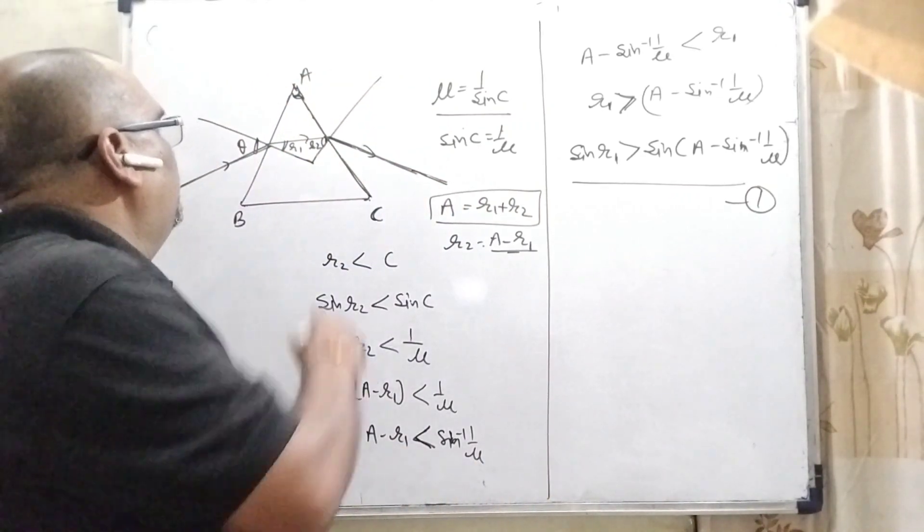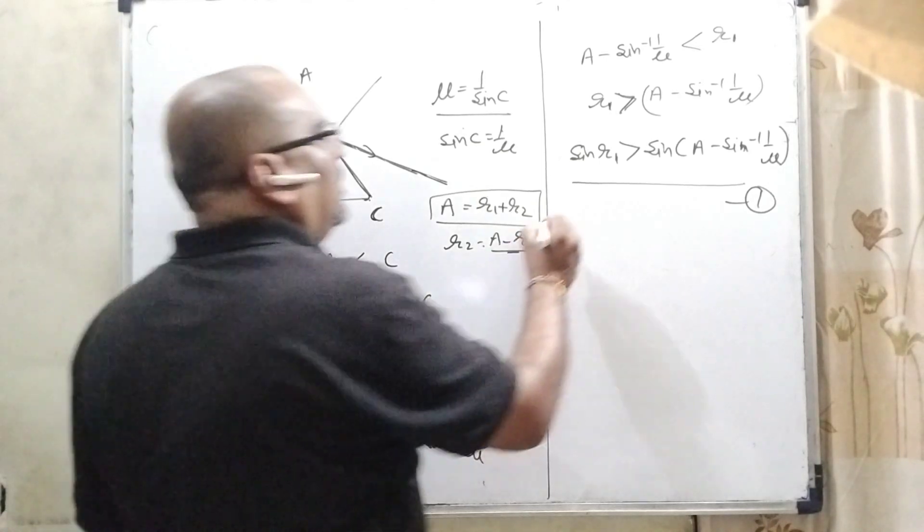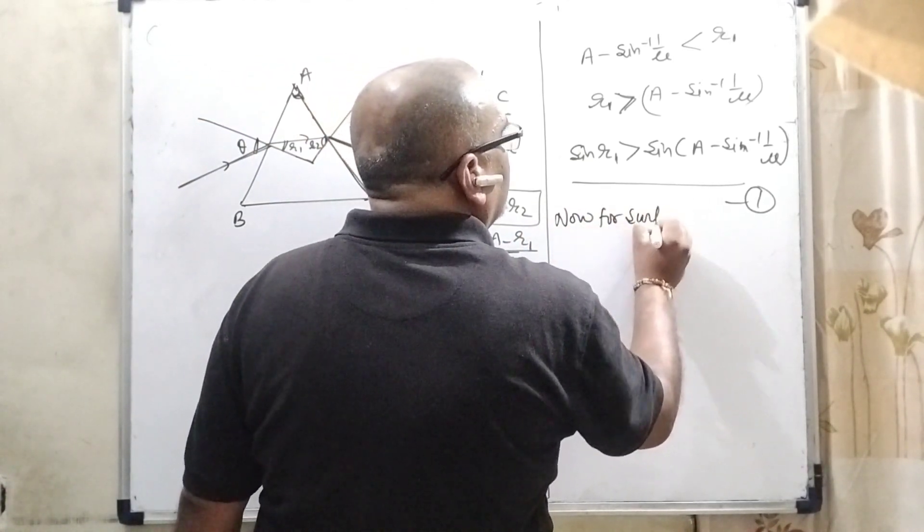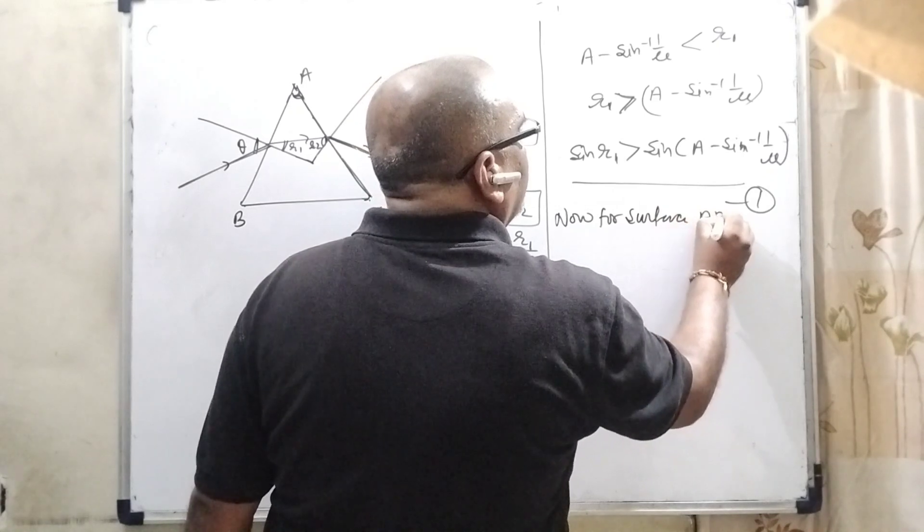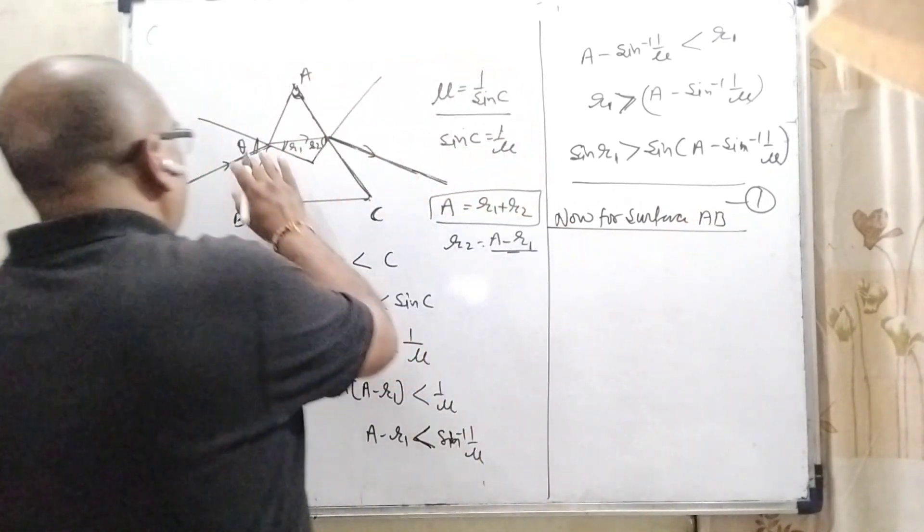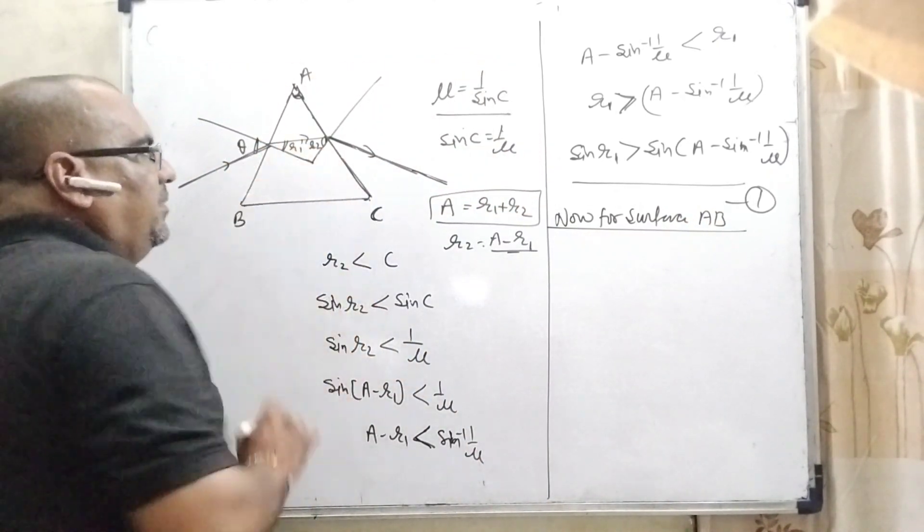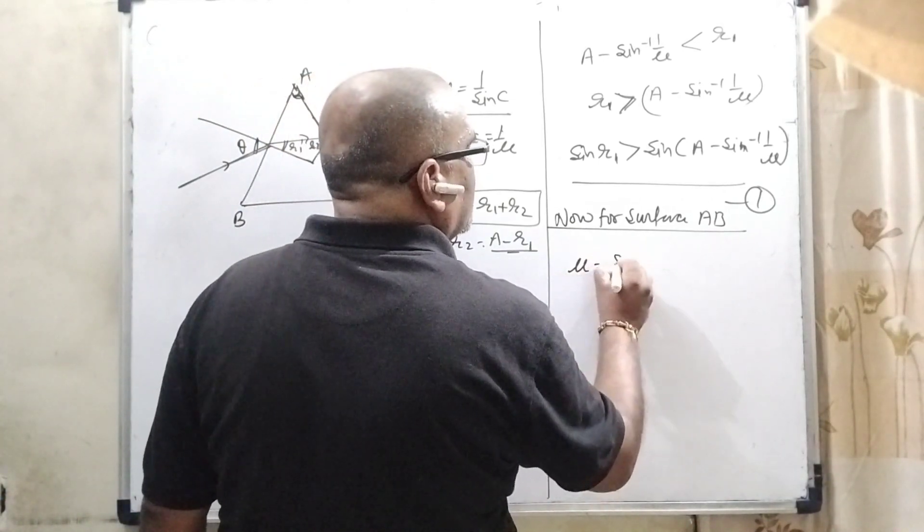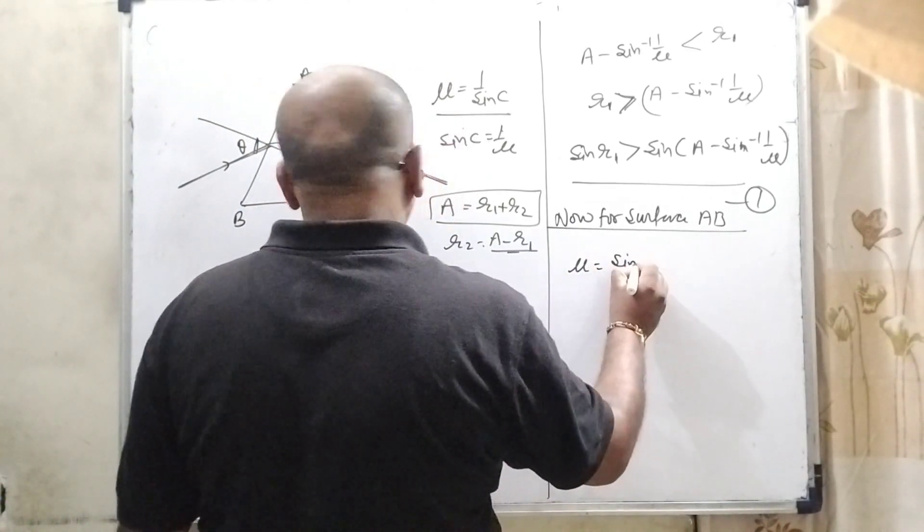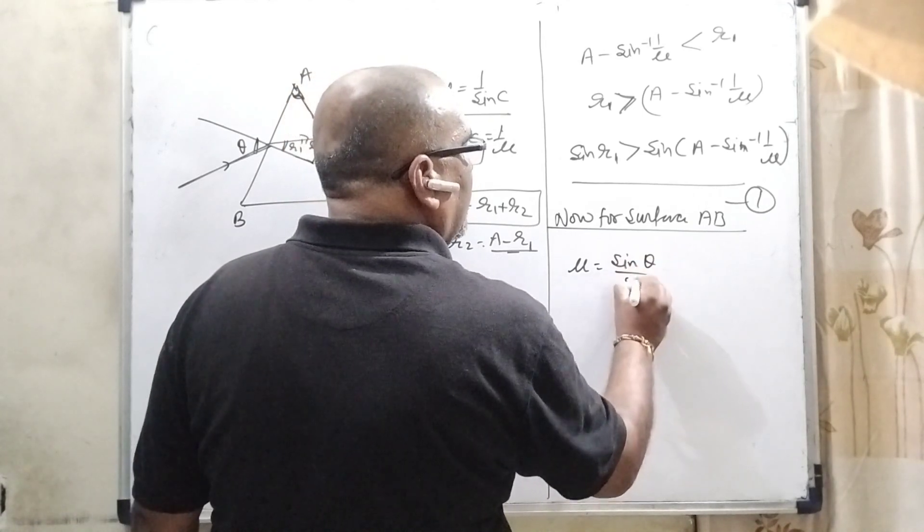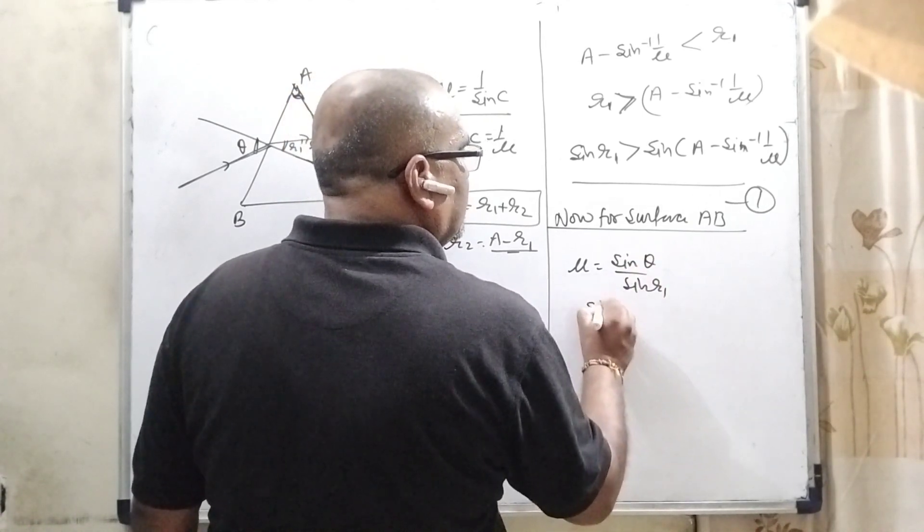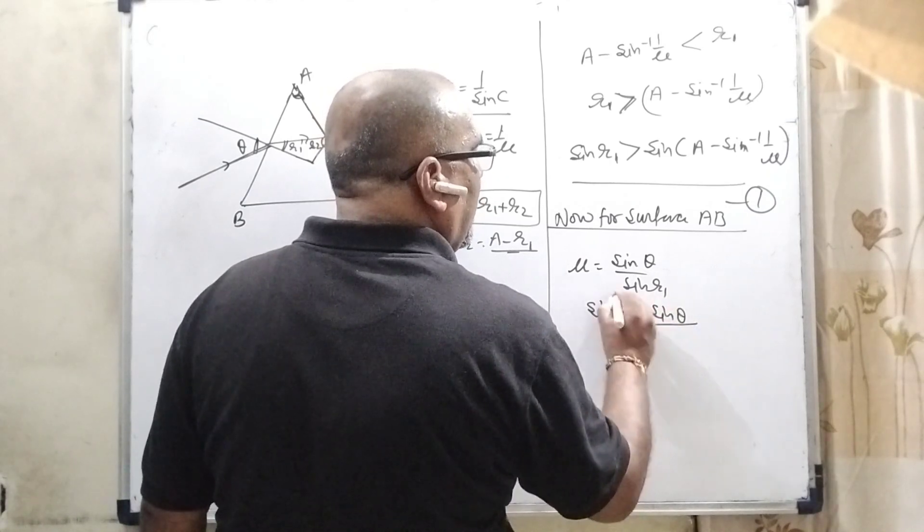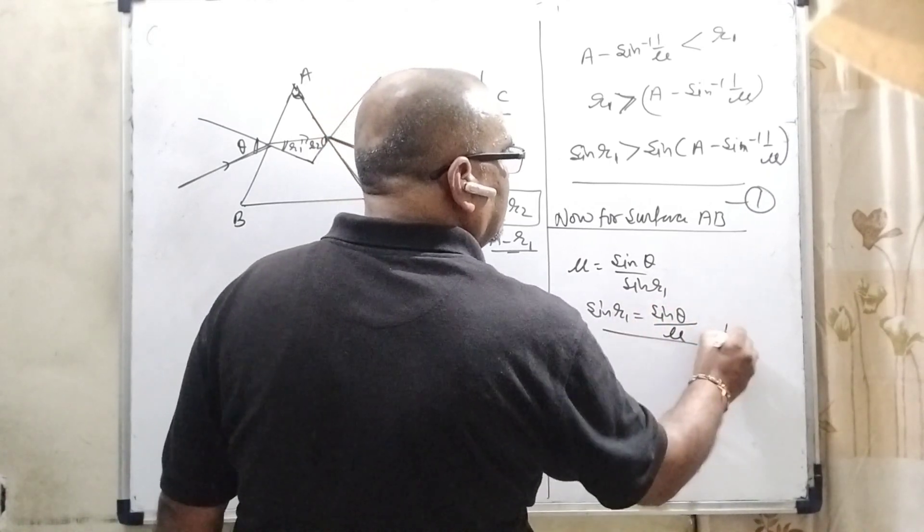Now for the surface AB. Here angle of incidence is theta and this is R1. By again using Snell's rule, here mu equals to sin theta upon sin R1. Then sin R1 is equal to sin theta by mu. This is second equation.